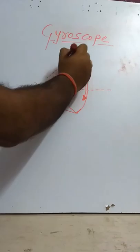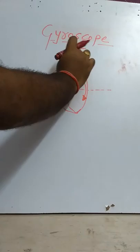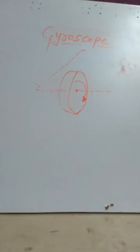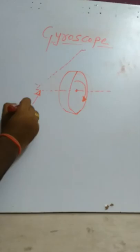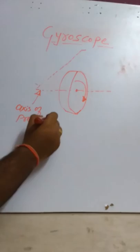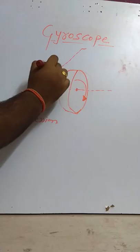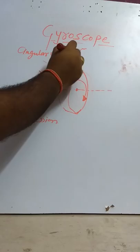After providing angular velocity, we will get the new axis of spin. As far as gyroscopic effect is concerned, the axis of spin is called the axis of precision. This new axis is called angular velocity of precision.